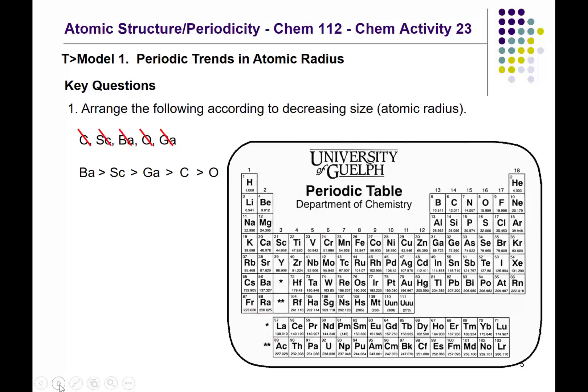We've looked at a number of features concerning atomic radius, and all of these are the sorts of skills you should be able to apply to any trend. We have two more trends to look at: ionization energy and electronegativity.